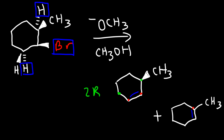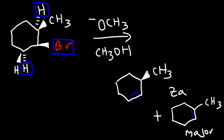For the second product, notice that there are three carbon atoms attached to the double-bonded carbons, so this is a trisubstituted alkene. Trisubstituted alkenes are more stable than disubstituted alkenes, so this is going to be the major product — the Zaitsev product. The disubstituted one is the minor product, also known as the Hofmann product.